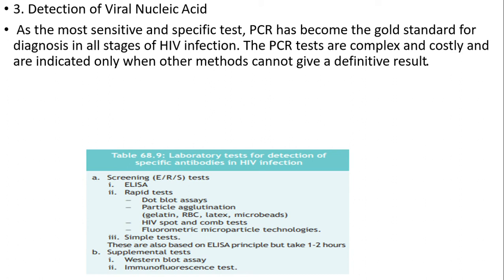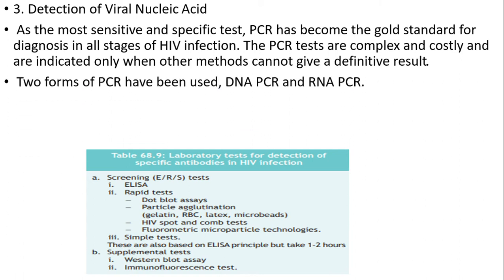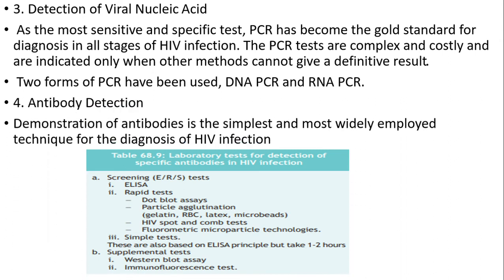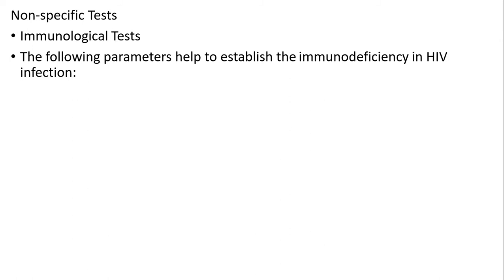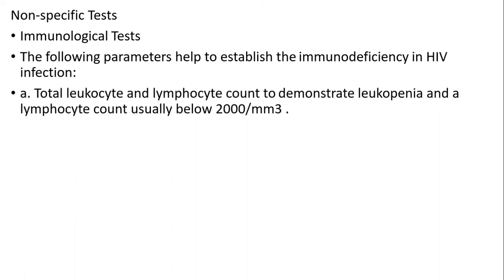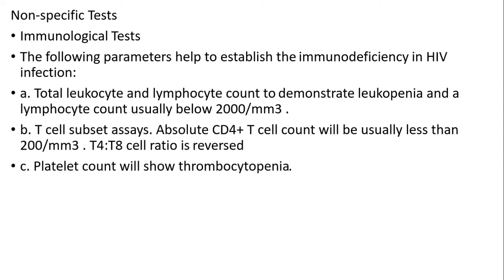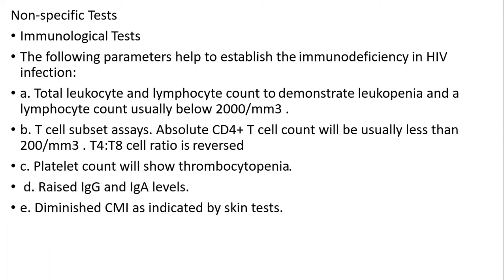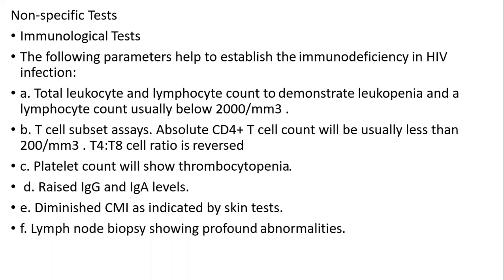PCR tests are complex and are indicated only when other methods cannot give a definitive result. Two forms of PCR can be used: DNA PCR and RNA PCR. Fourth is antibody detection: demonstration of antibodies is the simplest and most widely employed technique for diagnosis of HIV infection. Non-specific tests: immunological tests help establish immune deficiency in HIV infection. Total leucocyte and lymphocyte count demonstrate leucopenia and lymphocyte count usually below 2,000/mm³. T-cell subset assays, platelet count showing thrombocytopenia, raised IgG and IgA levels, diminished CMI, tuberculin-based skin test, and lymph node biopsies showing profound abnormalities are also used.